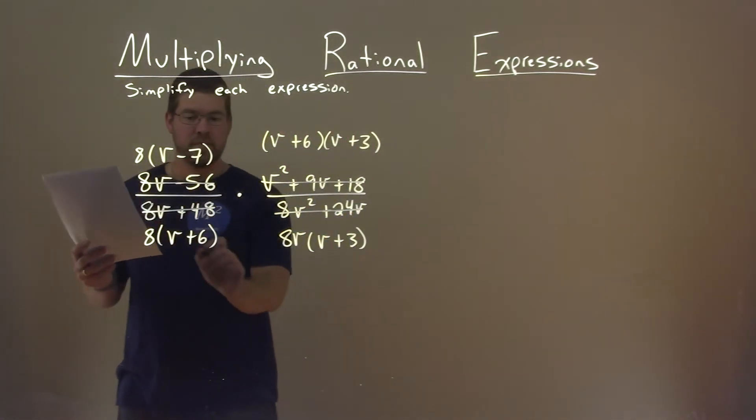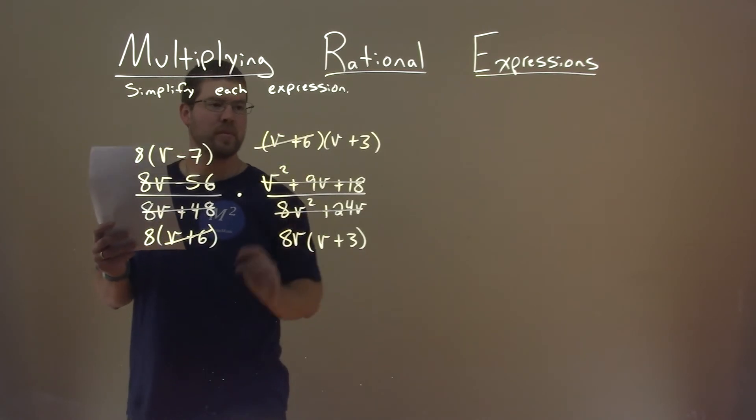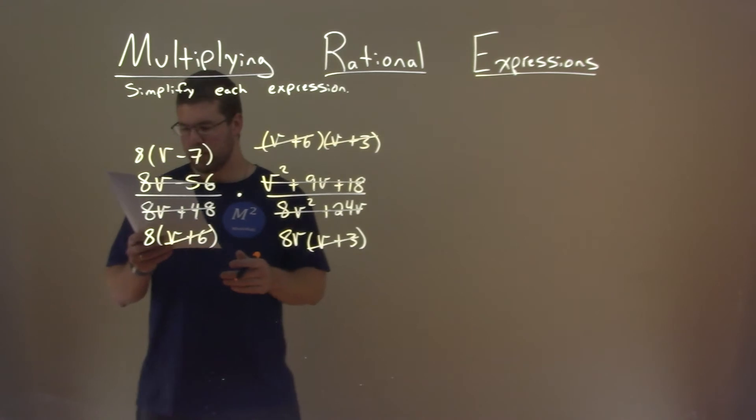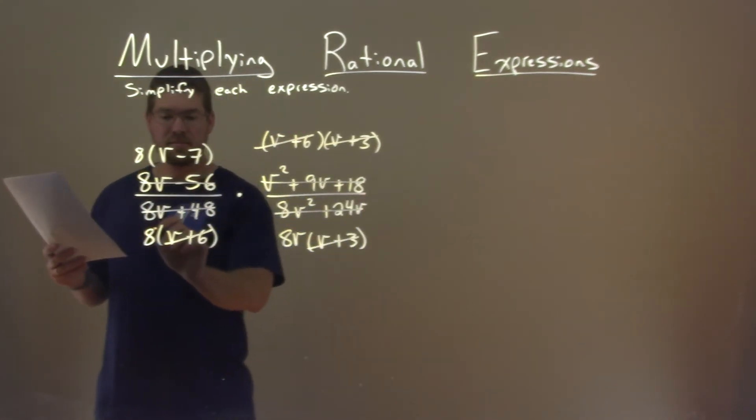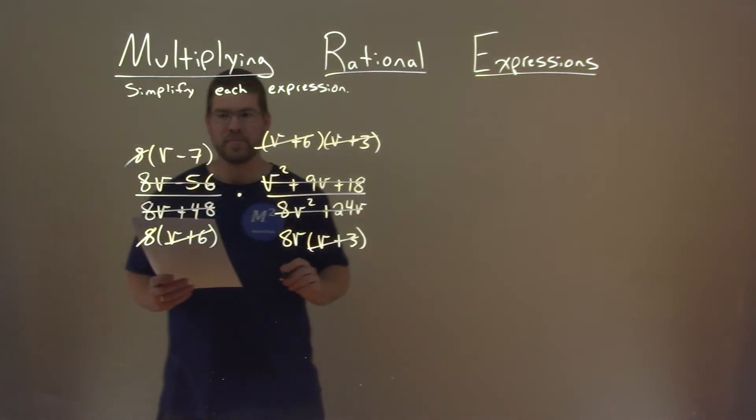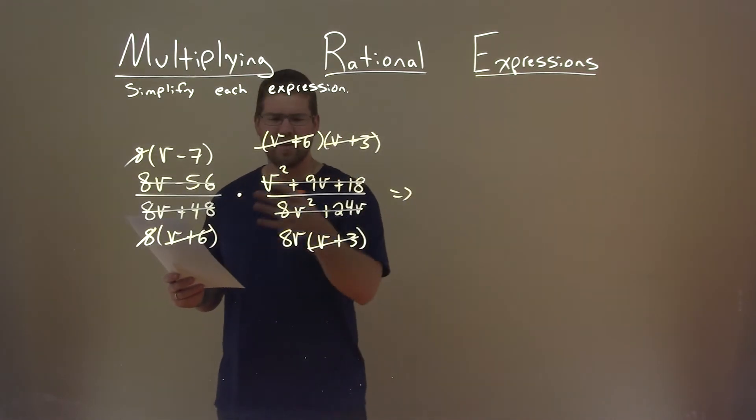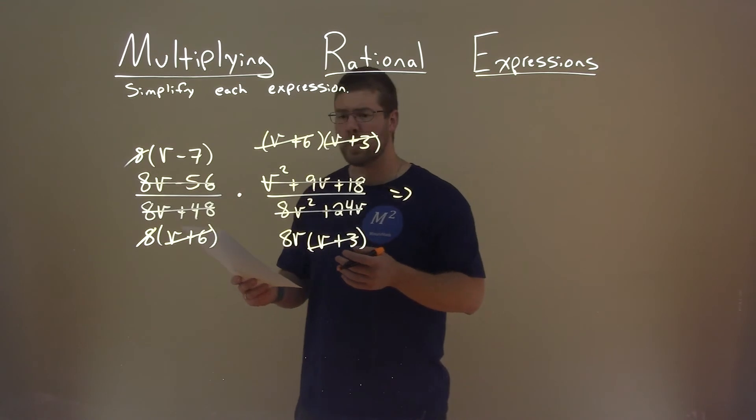Let's see what we can cancel out. v plus 6, v plus 6 here. v plus 3 here. v plus 3 right there. And an 8 and an 8. Nothing else seems that we can cancel out. So what are we left with?